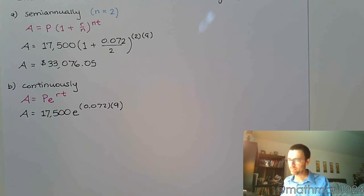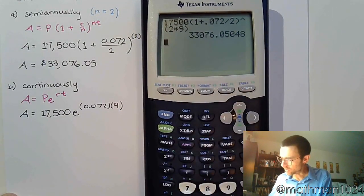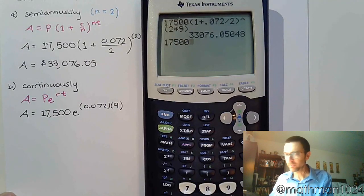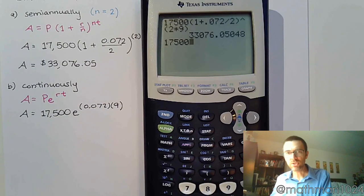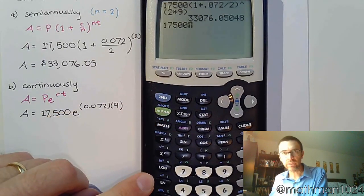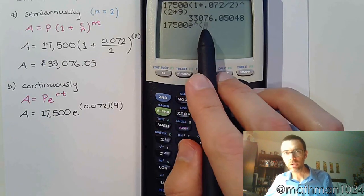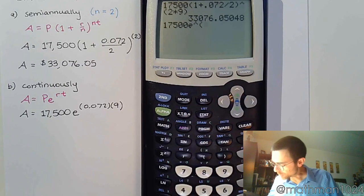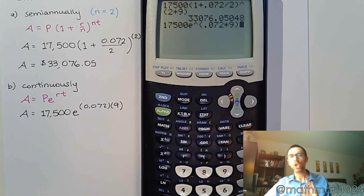This is a calculator problem. That's why we have the calculator here. So 17,500. I showed you two different places to use the e. Since we have to do e raised to a power, let's do the one that's down here. Second LN. So I get e, the power, and the parentheses. Inside the parentheses, I have 0.072 times 9.